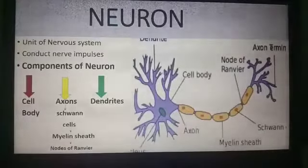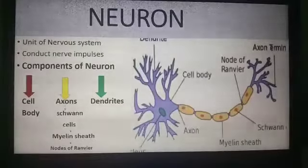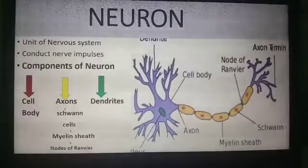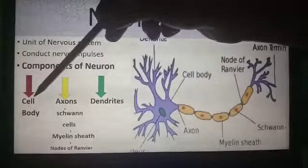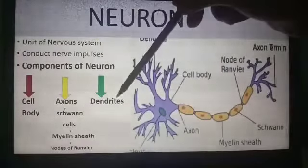Neurons conduct nerve impulses from the receptors to coordinators, and then from the coordinators to effectors. There are three components of the neuron: cell body, axons, and dendrites.